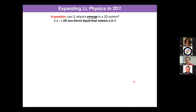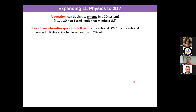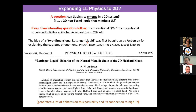Now, the question I want to ask is: can you have Luttinger liquid behavior for electrons in two dimensions — 2D metals? This is very intriguing because it asks: can you have a non-Fermi liquid that mimics a Luttinger liquid in two dimensions? If you do, you can ask follow-up questions: in such a 2D system, can you have Landau quantization? Can you have spin-charge separation in 2D? Can you have unconventional superconductivity? These are questions both experimentally and theoretically without a clear definitive answer.